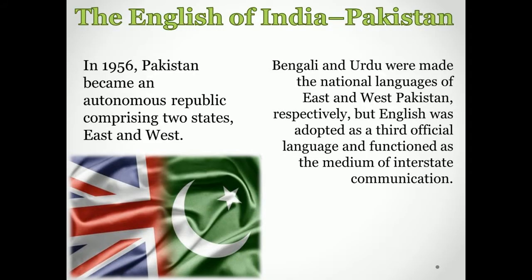In 1956 Pakistan became an autonomous republic comprising two states, East and West. Bengali and Urdu were made the national languages of East and West Pakistan respectively, but English was adopted as a third official language and functioned as the medium of interstate communication. In 1971 East Pakistan broke away and became the independent state of Bangladesh.